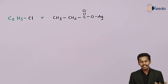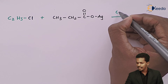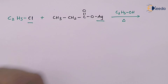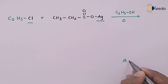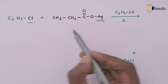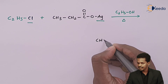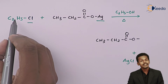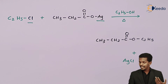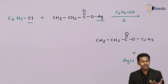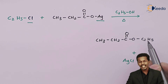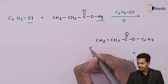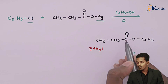The reaction again takes place in ethanolic solution. The silver atom along with the chlorine atom move out as AgCl. The rest — the carboxylate ion CH₃CH₂C(=O)O — combines with the alkyl group C₂H₅. The product, by IUPAC name, is called ethyl propanoate.